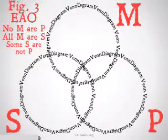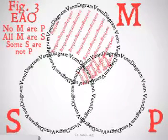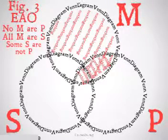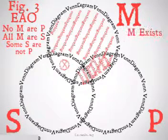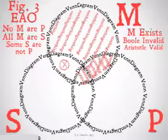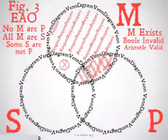Figure 3, EAO: No M are P, all M are S, therefore some S are not P. Once again, this is a particular conclusion from universal premises, so it's not going to be Boolean valid. We notice that there is one area of our M term that is open, so we'll put an X with a circle around it in that area. We see M does exist, so that X with a circle around it gets to stay there. It's going to be Boolean invalid yet Aristotle valid, because that X with a circle around it is exactly the O conclusion we were looking for.